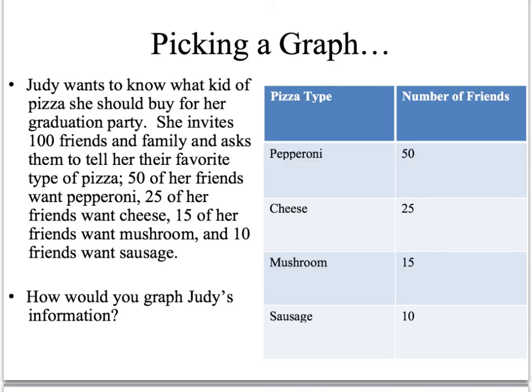Okay. Judy wants to know what kind. Sorry, that's a typo. We're just going to leave that there. Hey, I'm allowed a few. A pizza she should buy for her graduation party. So she invites a hundred friends. You can see the data here. And it shows you what everybody would want. How would you graph it?